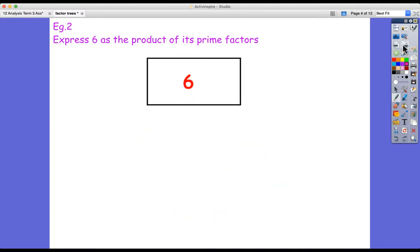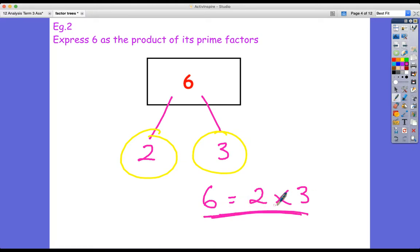Let's do another one. Express six as the product of its prime factors. What can it be split up into? Well, two and three. Again, easy, they're both prime. These are too easy. So six as the product, product means multiply of its prime, prime numbers, factors. Yes, they're both factors. Six equals two times three. Too easy, too straightforward.